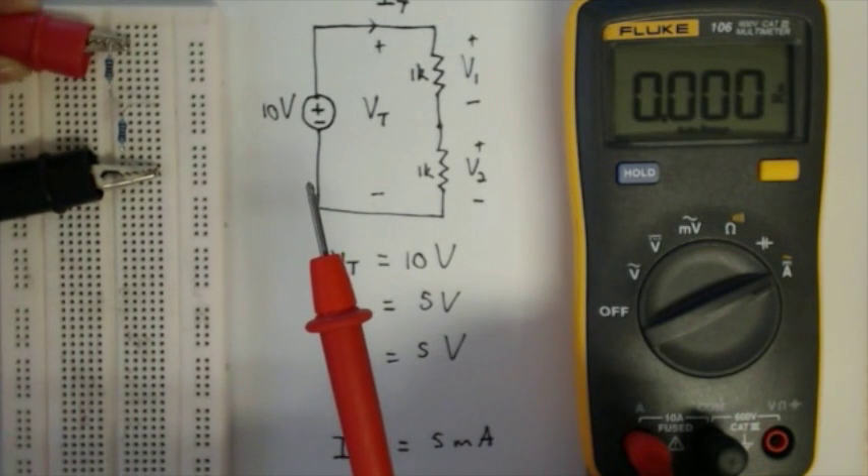Next up we are going to measure current. So let's make the necessary adjustments to the multimeter. The red connector needs to be moved to this side and we need to adjust the dial to the current setting. Remember that we need to measure current in series with a circuit. So we need to disconnect the red lead or positive lead of the supply voltage and connect it to the red lead of the multimeter. Then we need to connect the black terminal of the multimeter to the rest of the circuit.